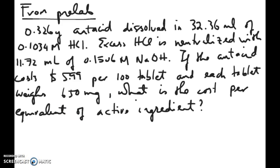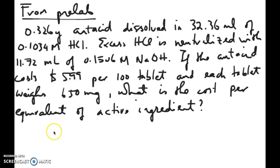Just to remind you again the meaning of the word equivalent: an equivalent is something that we use to measure how much active ingredient we have in our antacid. We do that because the active ingredient might be more than one compound — it might be two or three different weak bases. So we can't just use number of moles. Instead we use equivalents, which is basically the same as the number of moles of HCl that's neutralized. One equivalent is equal to one mole of HCl neutralized.